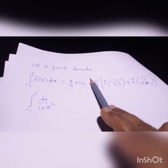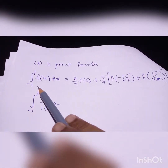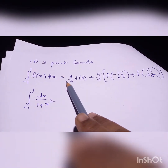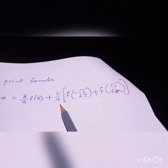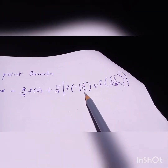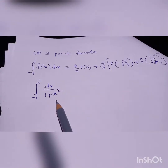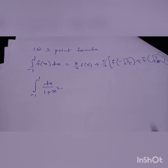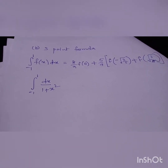For the same question, you also have to solve using the three-point formula. The three-point formula is: integration of minus 1 to 1 of f(x) dx is equal to (8/9)·f(0) plus (5/9)·[f(-√(3/5)) plus f(√(3/5))]. This is the formula for the three-point method. Our question is the integration of minus 1 to 1 of dx/(1 + x²).